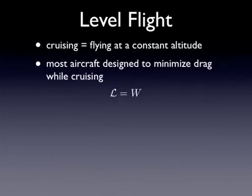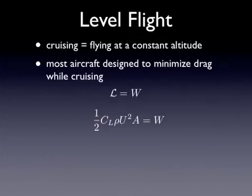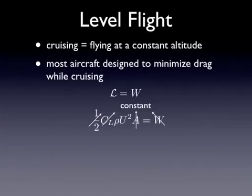If the plane's not ascending or descending, then this is a simple force balance of lift — the lift has to equal the weight of the aircraft. If we put in our lift equation, we can see that most of the variables are fixed. There's not much a pilot can do to affect them. The coefficient of lift is a constant, the area is a constant, the weight of the aircraft — all fixed before the pilot takes off. So what you're left with is that rho times u squared is a constant value for a specific aircraft.